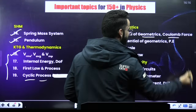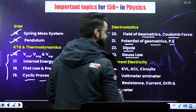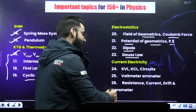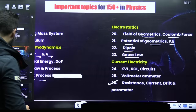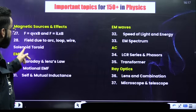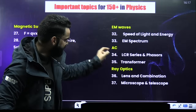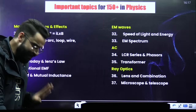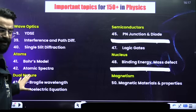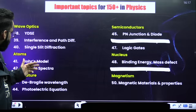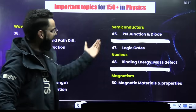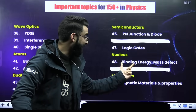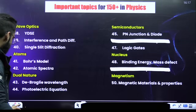In electrostatics: field of geometries, Coulomb's force, potential of geometries, potential energy, dipole, and Gauss's law. For current electricity: KVL, KCL circuits, voltmeter, ammeter, resistance, current, drift velocity and their parameters. Then magnetic sources and effects, EM waves, AC circuits, and ray optics are asked every year. In wave optics: Young's double slit, interference and path difference, and single slit diffraction. In atoms: Bohr's model and atomic spectra. In dual nature: de Broglie's wavelength and photoelectric effect. In semiconductors: PN junction, diode, and logic gates. In nucleus: binding energy and mass defect. In magnetism: magnetic materials and properties.